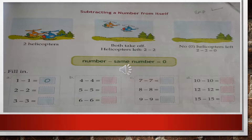Here we have some examples of subtraction of the same number. 1 minus 1: if we have 1 and subtract 1, the answer will be 0. 2 minus 2: the answer will be 0. 3 minus 3: the answer will be 0. 4 minus 4: the answer will be 0. 5 minus 5: the answer will be 0. 6 minus 6: the answer is 0. 7 minus 7: the answer will be 0, because we have a total of 7 numbers and we are subtracting 7 numbers. 8 minus 8 is 0. 9 minus 9 is 0. 10 minus 10 is 0. 12 minus 12 is 0.